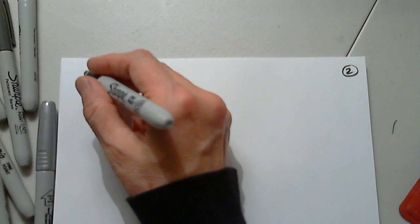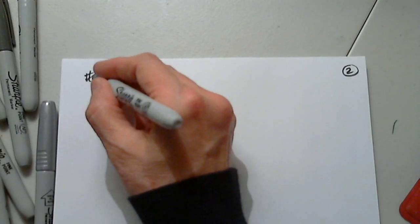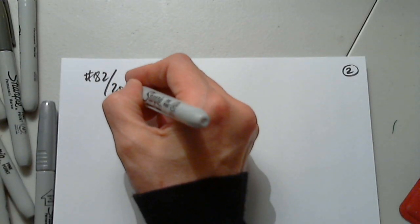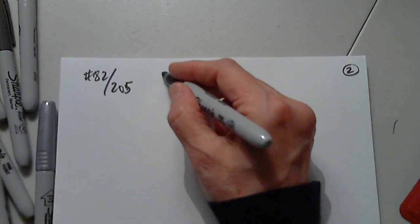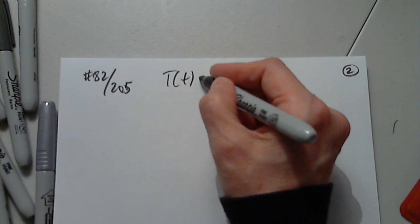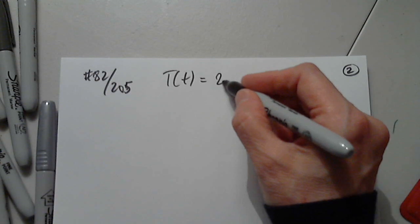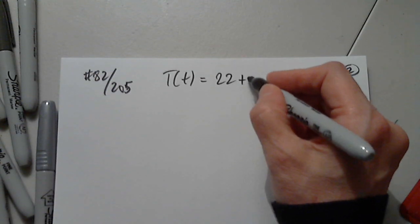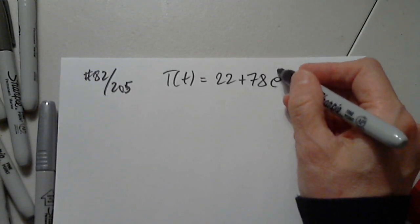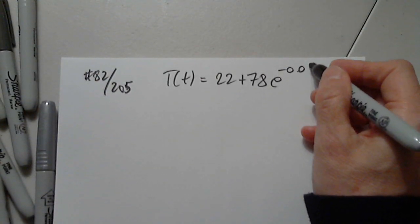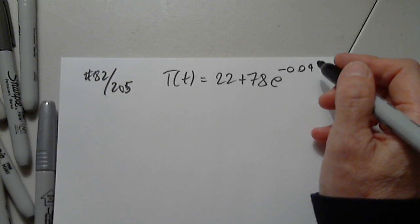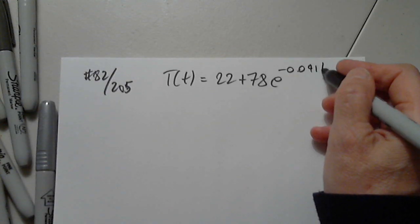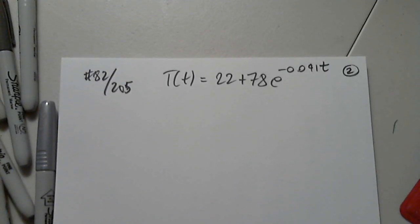Page 2. So 82 on 205. The function is T of T — the notation isn't ideal, but the function is T(t) = 22 plus 78e to negative 0.041t. What was the original temperature of the boiling water?